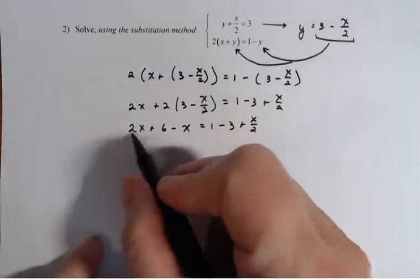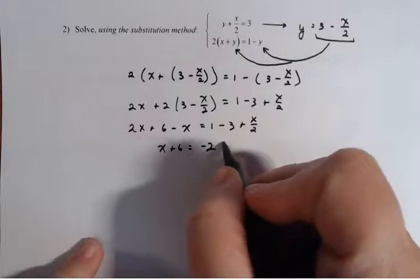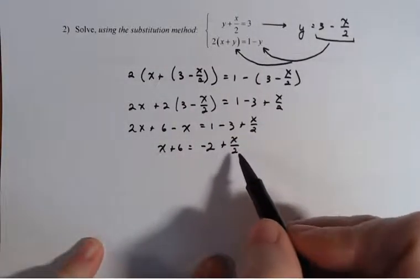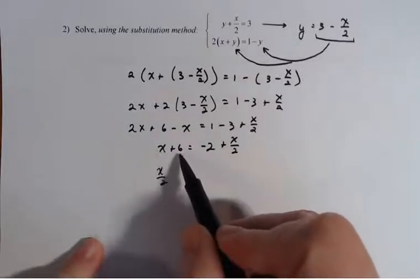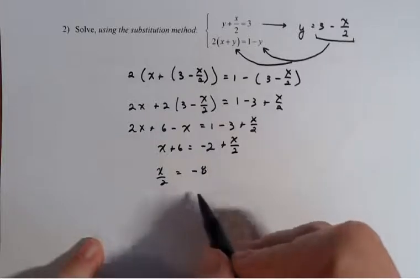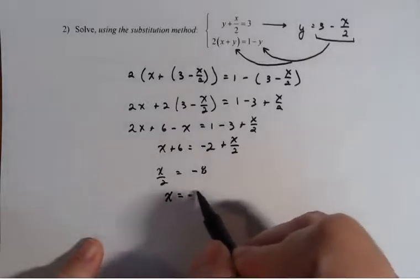I have a single x here plus six equals negative two plus x over two. So I'm going to subtract x over two from both sides. That's going to give me x over two over here. Subtract six from both sides equals negative eight. Multiply both sides by two. I have x equals negative 16.